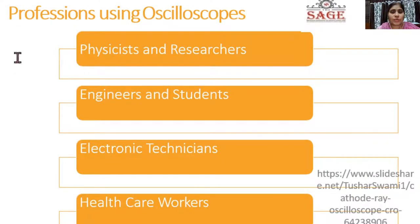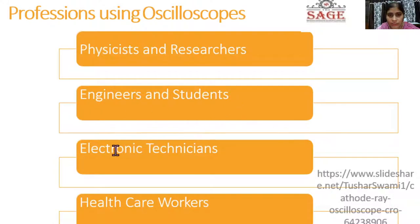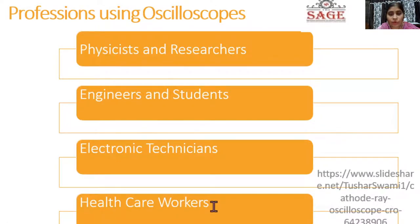The professionals using the oscilloscope include physicists and researchers, engineers and students, and electronic technicians who are making changes in their circuits. Electricians and electronic technicians can make use of the CRO, and health workers also — for example, if they want to display signals like ECG signals. So health workers are also using the CRO.